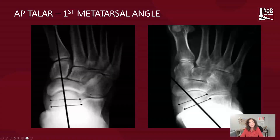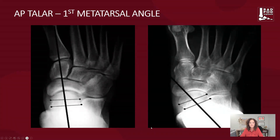Looking at the AP talar first metatarsal angle, we can appreciate the normal state by taking the bisection of the talus and seeing where that lies along the first metatarsal. Clearly here we can see this talar metatarsal angle doesn't meet and we have this widening of the AP talar first metatarsal articulation.